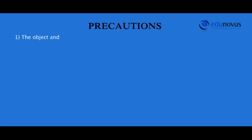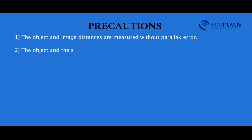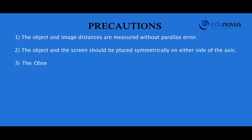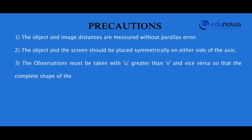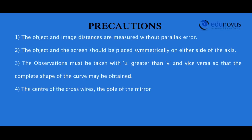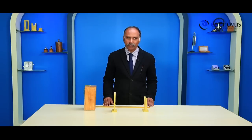Precautions: The object and image distances are measured without any parallax error. The object and the screen should be placed symmetrically on either side of the axis. Observations must be taken with U greater than V and vice versa so that the complete shape of the curve may be obtained. The center of the cross wire, the pole of the mirror, and the center of the screen should lie at the same height above the table. You are now able to determine the focal length of any given concave mirror by the distant object method and UV method on your own. Thank you for watching this video.